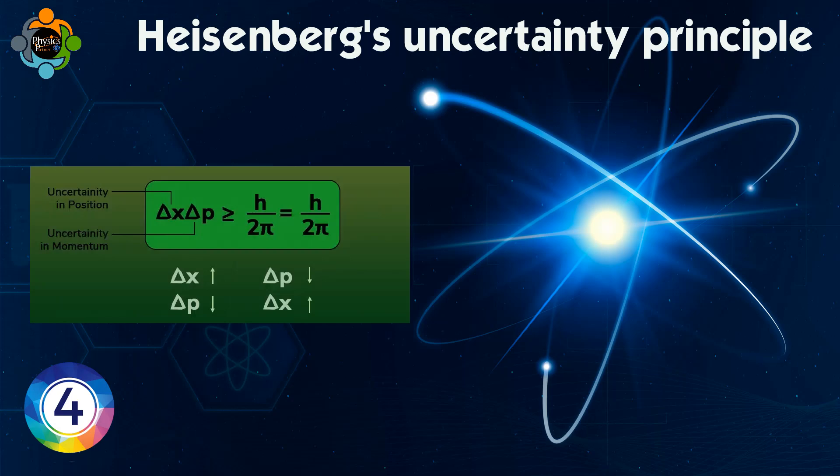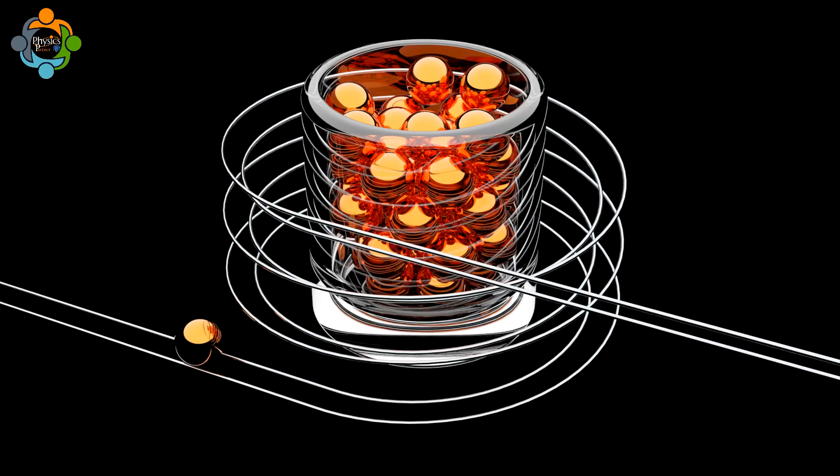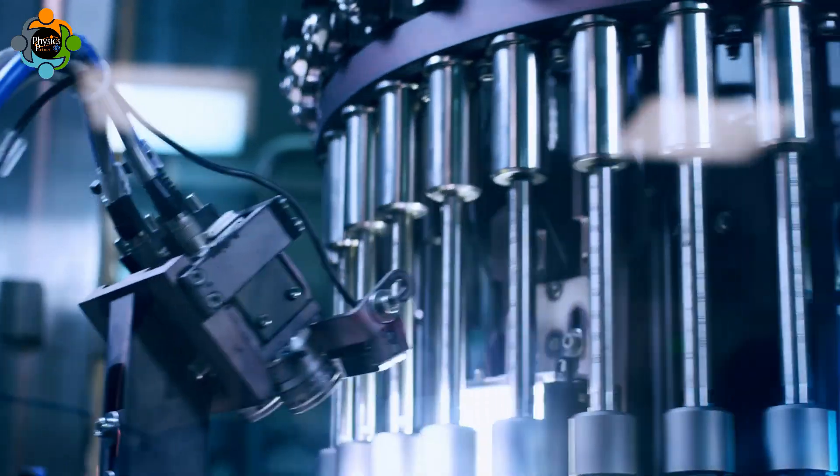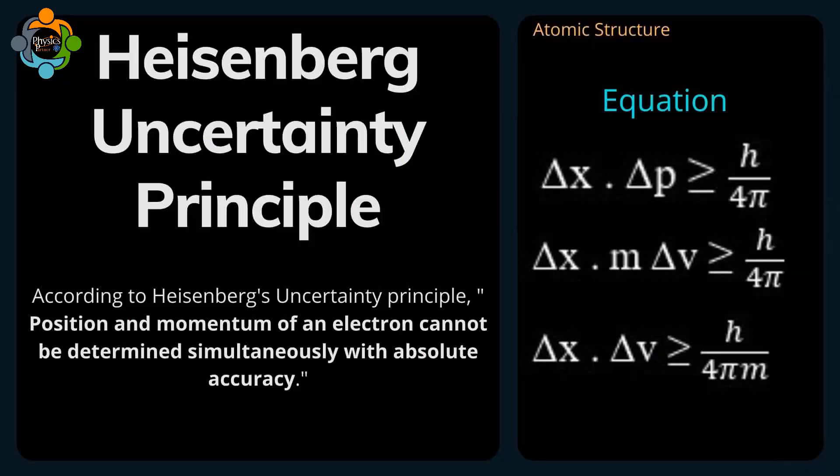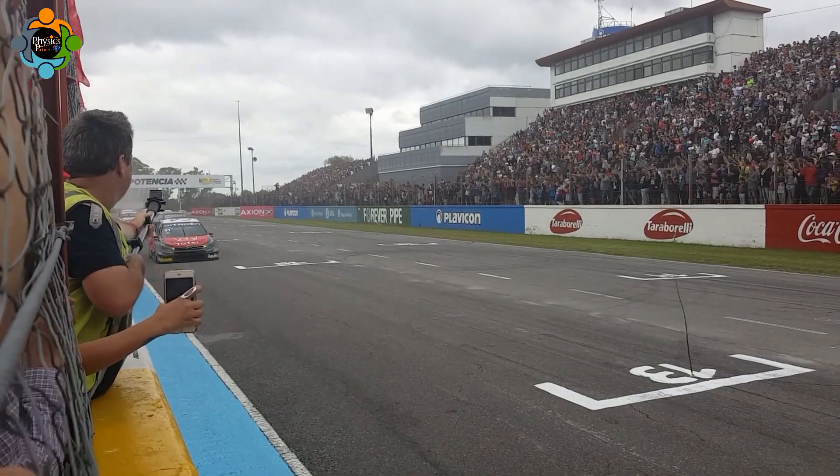Number four: the uncertainty principle. Here's where it gets really wild. In the quantum world, we cannot know both the exact position and momentum of an electron at the same time. It's not because our instruments aren't good enough—it's a fundamental law of nature. This is called Heisenberg's uncertainty principle. It's like trying to take a clear photo of a race car: the faster it goes, the blurrier the picture.